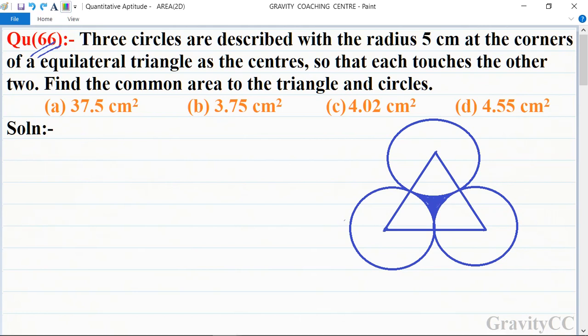The question shows an equilateral triangle with three circles drawn at each corner with radius 5, 5, 5 centimeter. We need to find the shaded region's area.